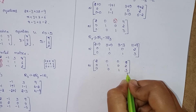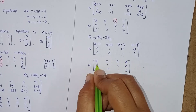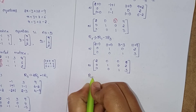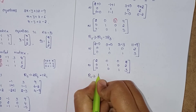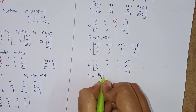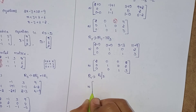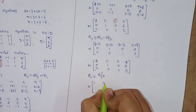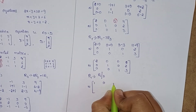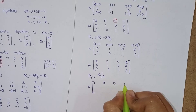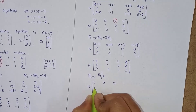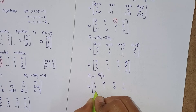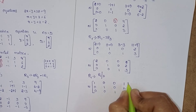In R1, it is a multiple of 2, so R1 by 2: 2 by 2 is 1, 0 by 2 is 0, 0 by 2 is 0, 2 by 2 is 1. Now we have the identity matrix [1 0 0 / 0 1 0 / 0 0 1] with constants [1, 2, 3]. Therefore, x equals 1, y equals 2, z equals 3.